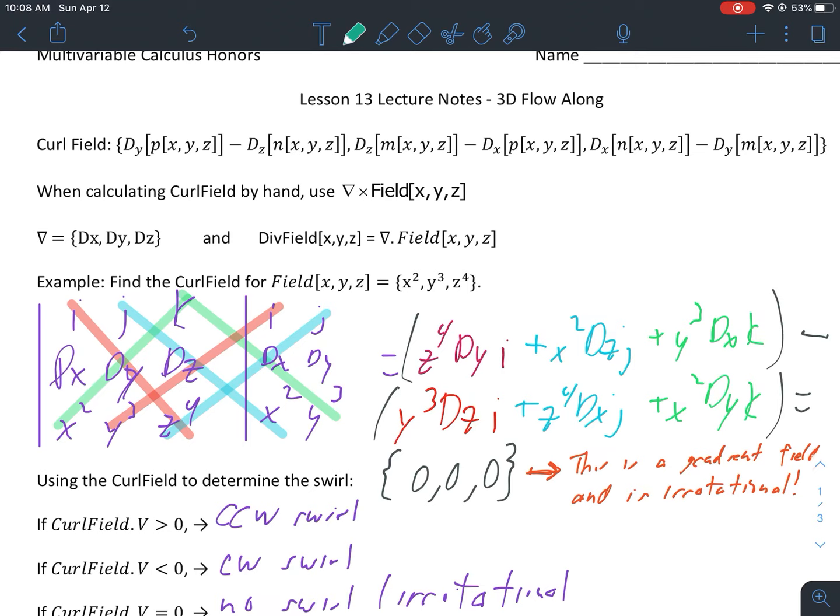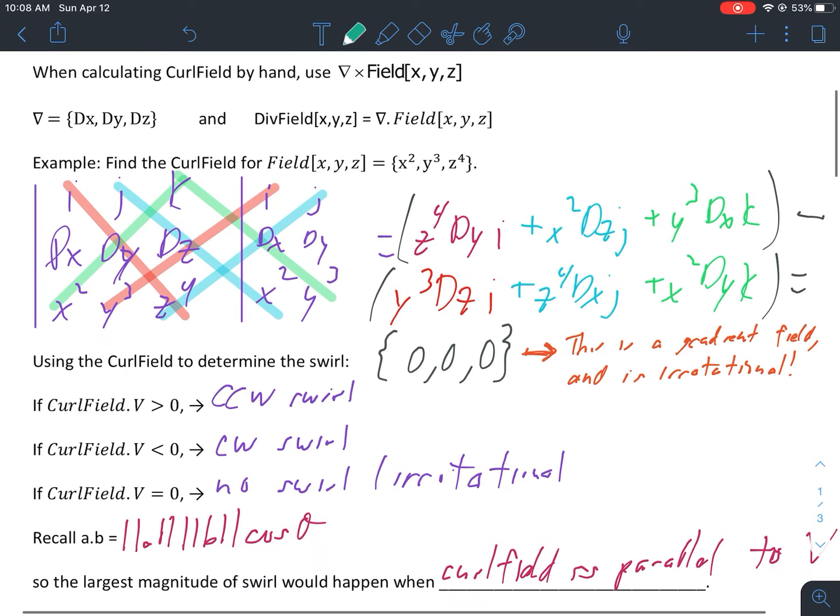At any point if you need to pause this video, obviously go ahead and do it and then come back when you're ready. So to determine the swirl, we do curl field dot the vector v. If that's positive, it's a counterclockwise swirl at that point. If it's negative, clockwise swirl at that point. And if it's zero, then there's no swirl or what we call irrotational.